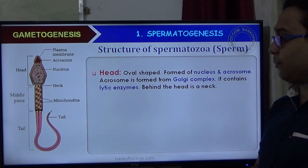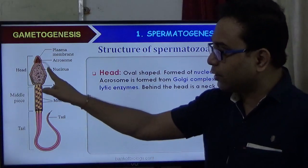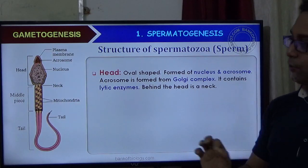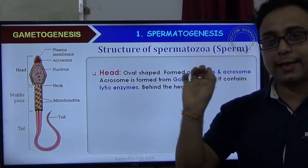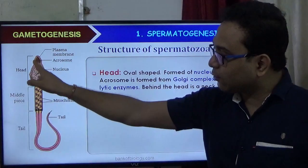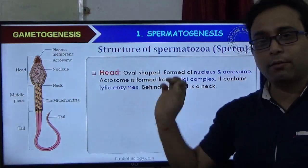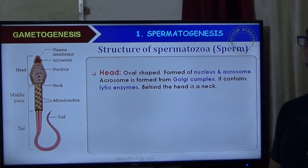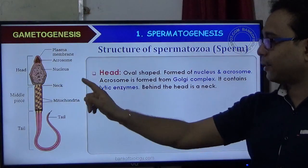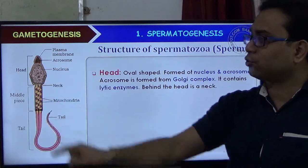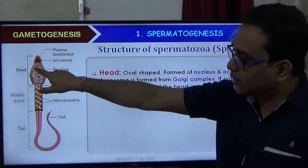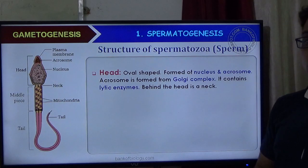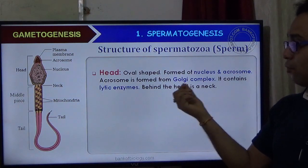The head part is the main part of the sperm. The main components are the nucleus and the acrosome. The acrosome and nucleus are the main parts of the head structure. The outer part is covered by the plasma membrane. The head contains the nucleus, and the acrosome sits just at the front of the elongated head.